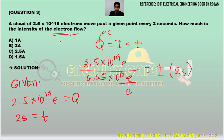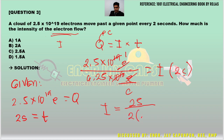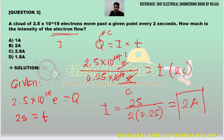The electron flow is current. Cancelling the electron units, we have 10 to the 18 cancelling, leaving 10 to the 1. So: 25 divided by (2 times 6.25) — 2 times 6.25 is 12.5, and 25 divided by 12.5 is 2. The answer is 2 amperes, which is letter B.